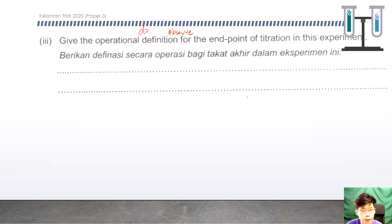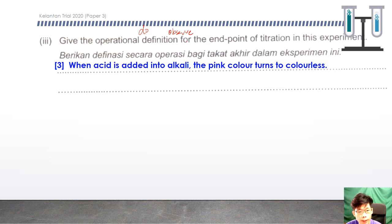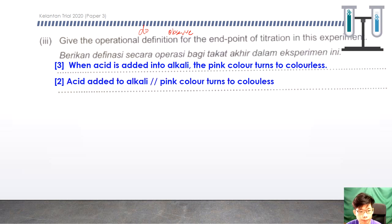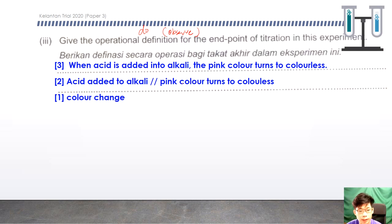Based on the two criteria: you have to state what you do — acid is added to alkali — and what you observe — the pink colour turns to colourless. This is the full operational definition for score 3. For score 2, mention only 'acid is added to alkali' (what you do) or only 'pink colour turns to colourless' (the observation). You can refer to the observation question and copy from there. For score 1, mention only 'colour change'.